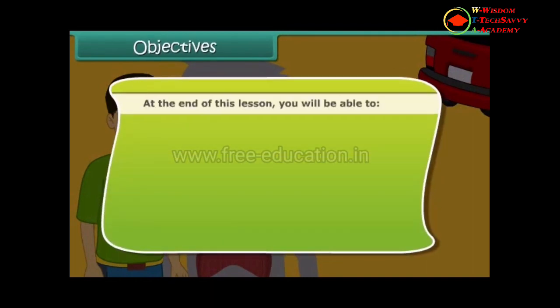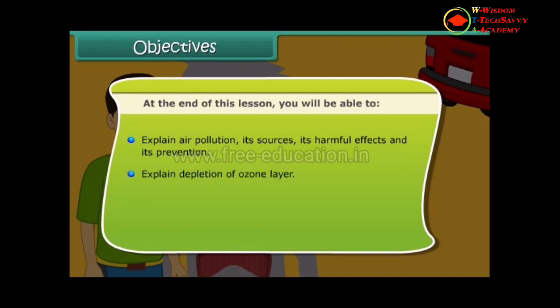At the end of this lesson, you will be able to: explain air pollution, its sources, its harmful effects and its prevention; explain depletion of the ozone layer; describe the greenhouse effect; and explain the formation of acid rain.